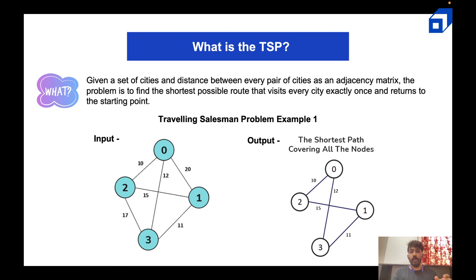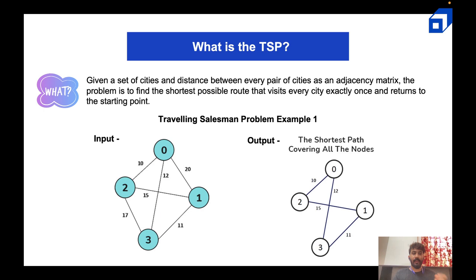Before we start with solutions and code implementations, let's understand what the Traveling Salesman Problem is. Given a set of cities and the distance between each pair of cities as an adjacency matrix, the problem is to find the shortest possible route that visits every city exactly once and returns to the starting point — for example, city zero would be the starting point.